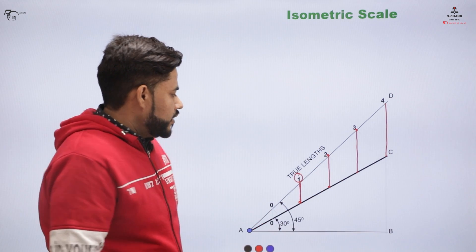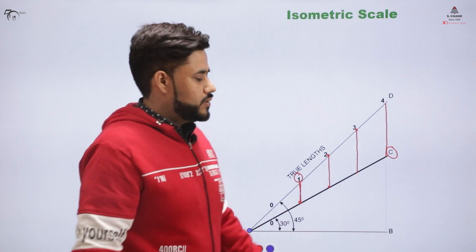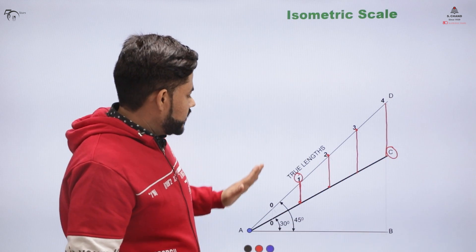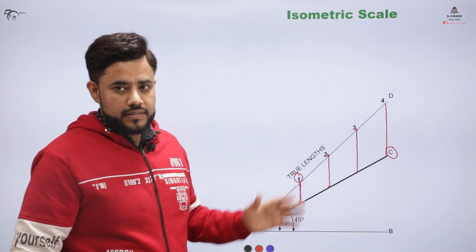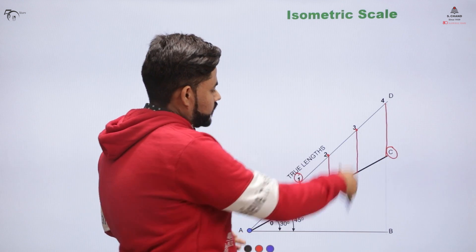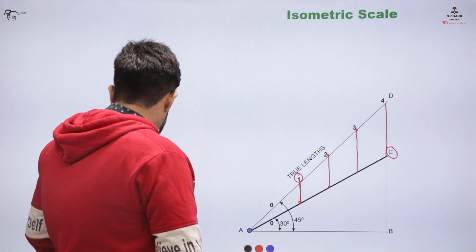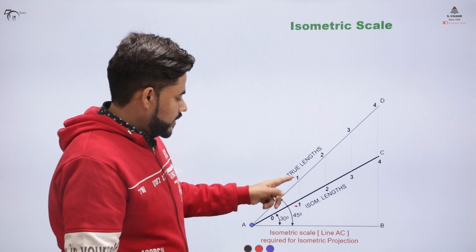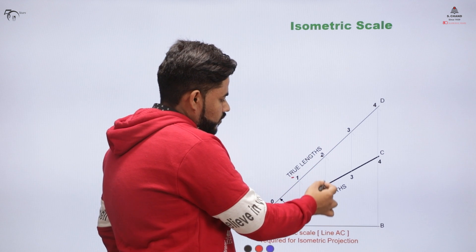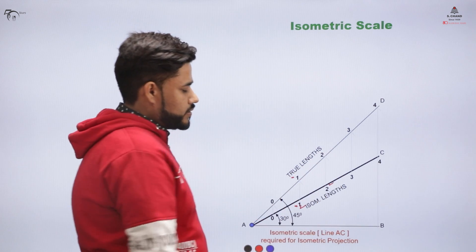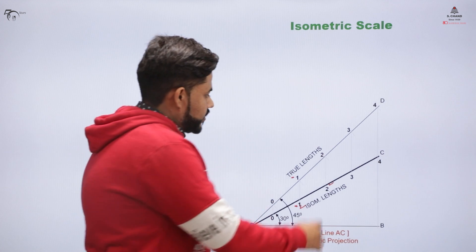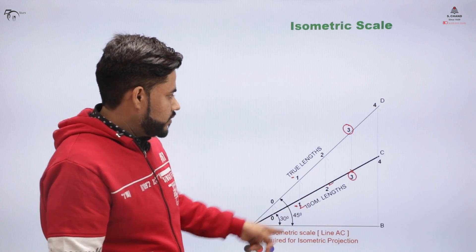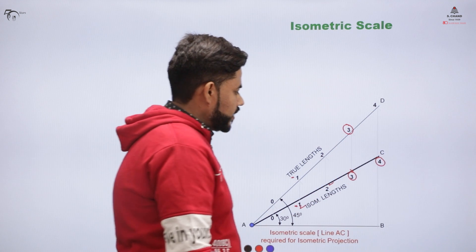Once this is done, you have to label this part as C. That means you will get the length of the line which is the reduced length. Let's say the true length was 50 — so this length would come out to be less than 50. This reduction is possible because of this isometric scale construction. You can label the projected points as 1, 2, 3, 4 on the isometric length, corresponding to the original points 1, 2, 3, 4 on the true length.